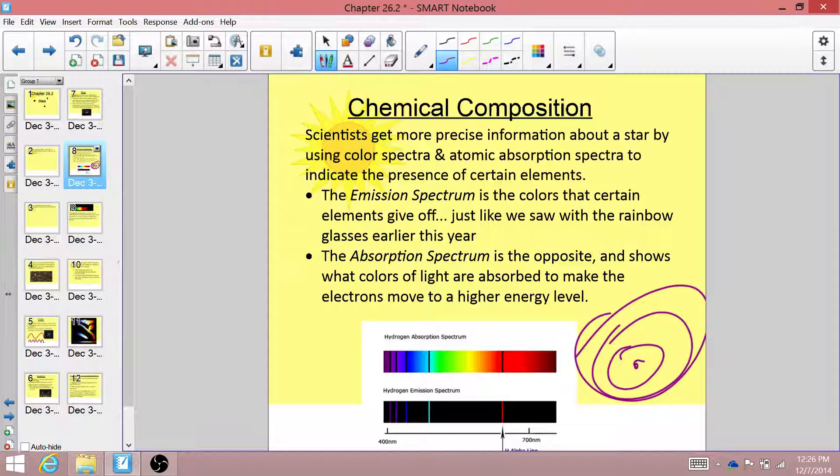Now astronomers will actually look at the opposite. They look at the absorption spectrum. And the absorption spectrum shows all of the colors that are released within a star with these dark bands here. These dark bands are the exact wavelengths of light that have to be absorbed by an electron in order for it to jump from a low level to a higher energy level.